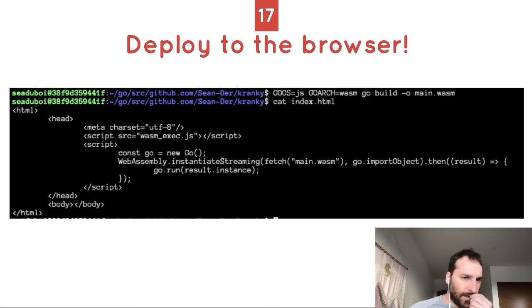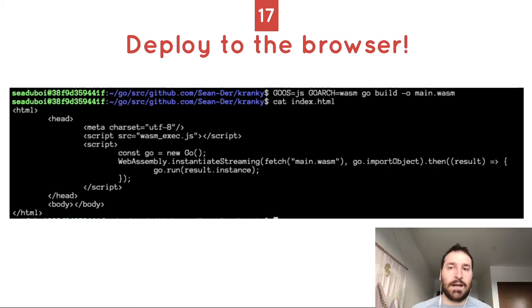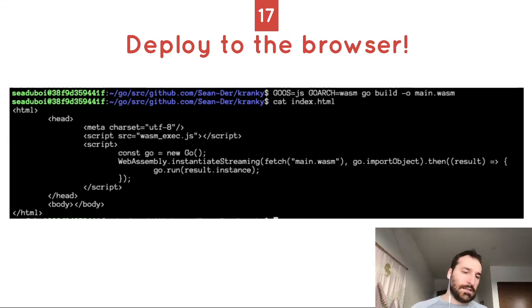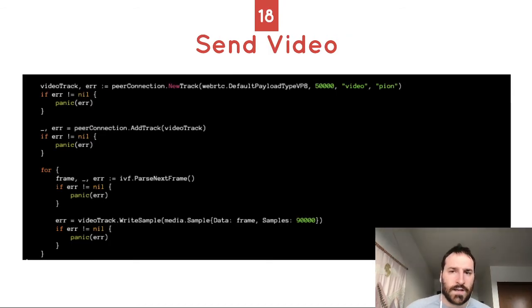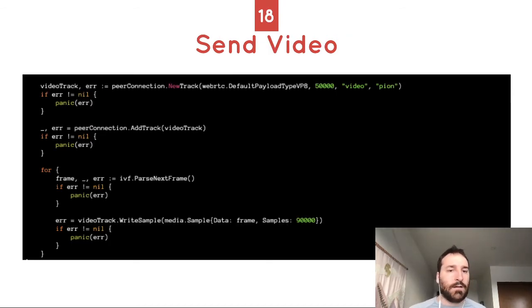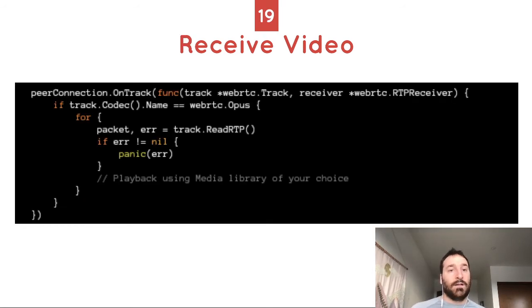If you write your implementation in Go, we also provide WASM bindings. You can build a WASM application and it works right in the browser. Sending video is easy as well — you create a new track, add frames to that track, and send them. On the other side, you set an on-track handler and read from it. And that's it.